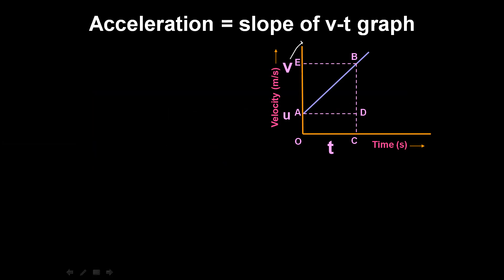On the graph, the y-axis is velocity and the x-axis is time. At time zero, the initial velocity is U. After a time T, the final velocity is V. This graph uses three symbols: V for final velocity, U for initial velocity, and T for time taken.